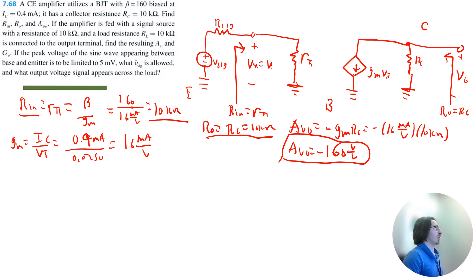If the amplifier is fed with a signal source with a resistance of 10 kilo-ohms, that's referring to this resistor up here, and a load resistance of 10 kilo-ohms is connected to the output terminal. So now we're connecting the load resistor here to the output terminal.